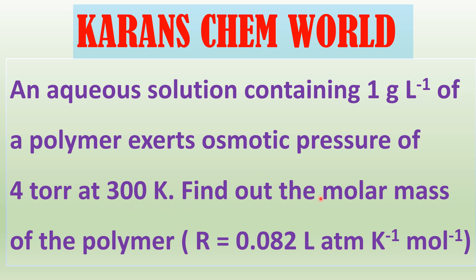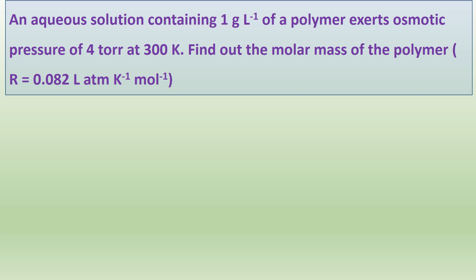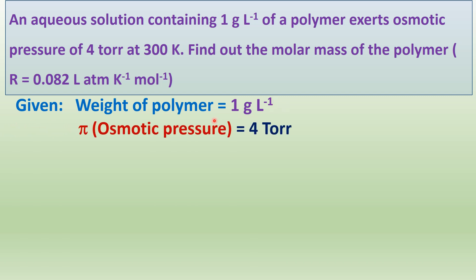What is the molecular mass of the polymer? Given R. What are the given data? They have given an aqueous polymer solution that consists of 1 gram per liter. And the osmotic pressure exerted by this polymer solution is equal to 4 torr.